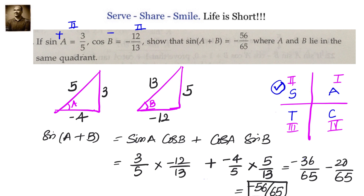The most important thing to understand: in 10th class we are limited to only the first quadrant where sine, cosine, and tangent are all positive because angles are between 0° to 90°. Now we are talking about four quadrants: 0° to 90°, 90° to 180°, 180° to 270°, 270° to 360° — or in radians: 0, π/2, π, 3π/2, 2π. Remember the mnemonic 'All Silver Tea Cups' for which ratios are positive in each quadrant.